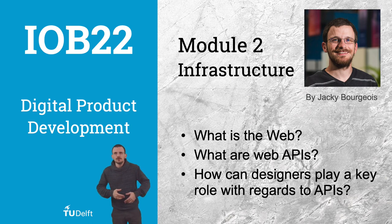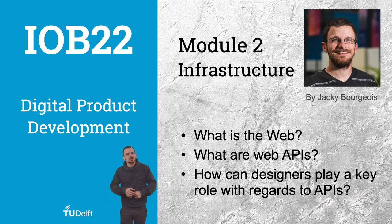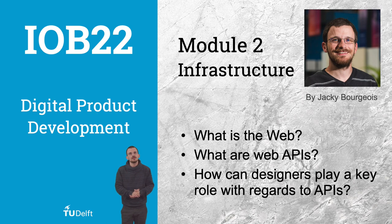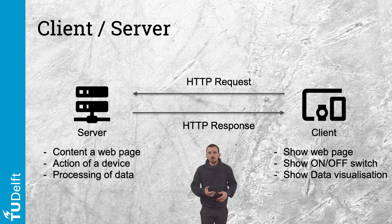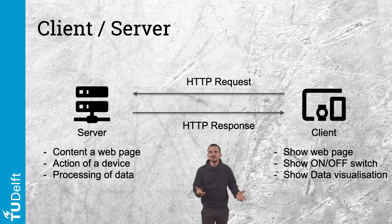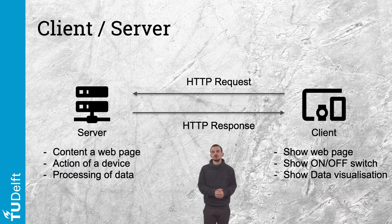With a better understanding of the Internet infrastructure, we can look at its core application, the World Wide Web. Let's go back to the concept of clients and servers discussed in the introduction. For clients — a web browser, smartphone, copy machine — to show a web page, an on-off switch, or even a data visualization, it needs to reach out to a server.